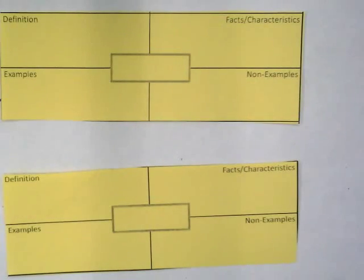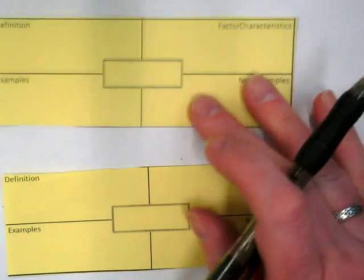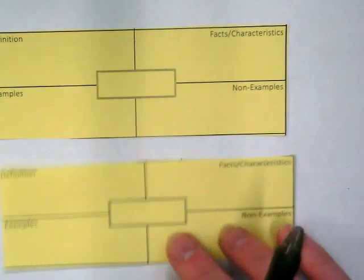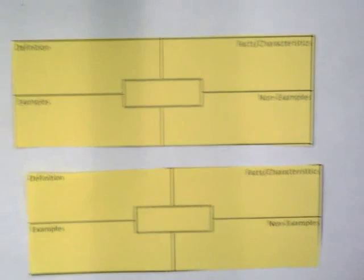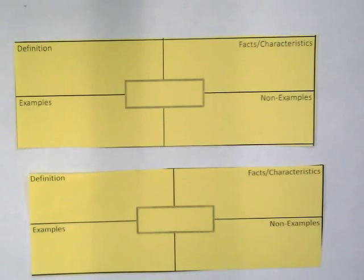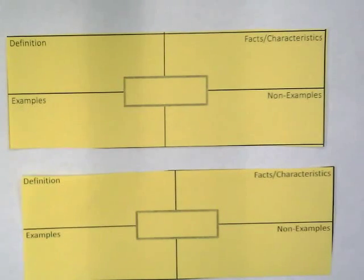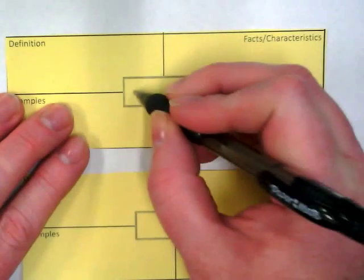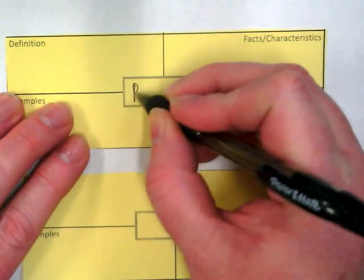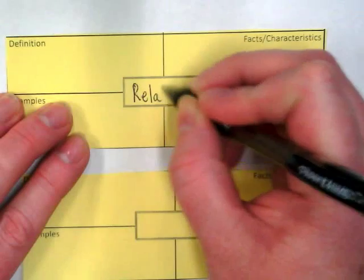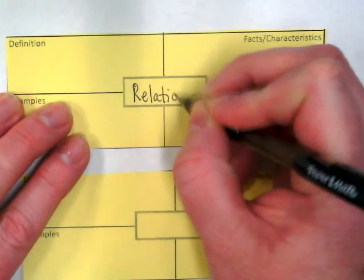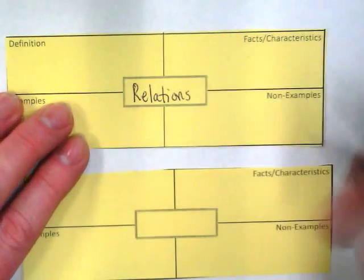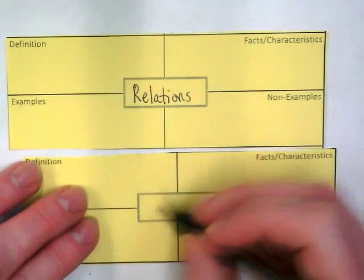We're starting Chapter 4 today, and we're starting with 4-2. We're skipping 4-1 — it's not something you actually need for high school algebra anymore. I have my book open. This section is titled Relations and Functions.